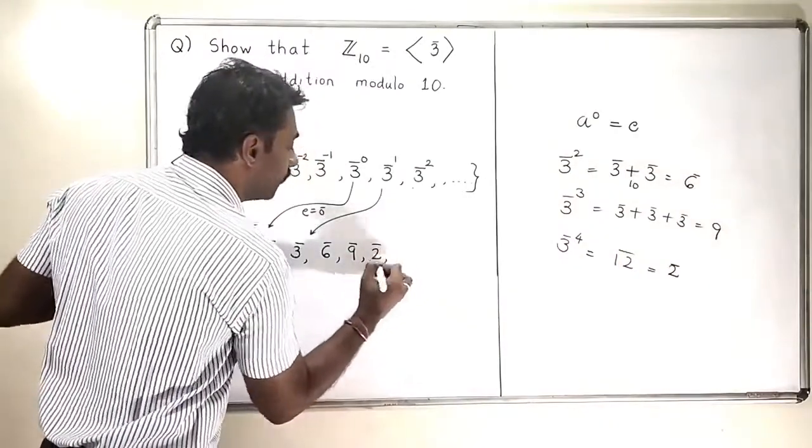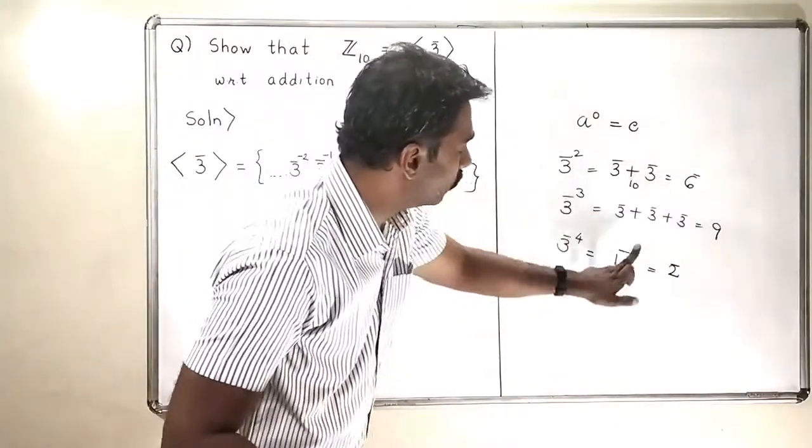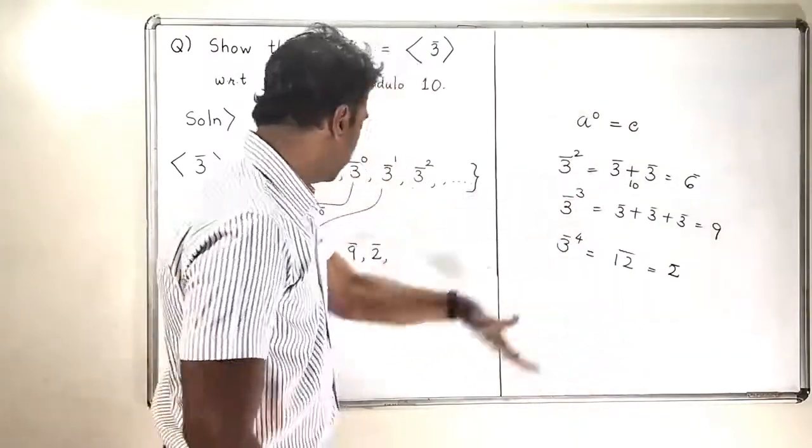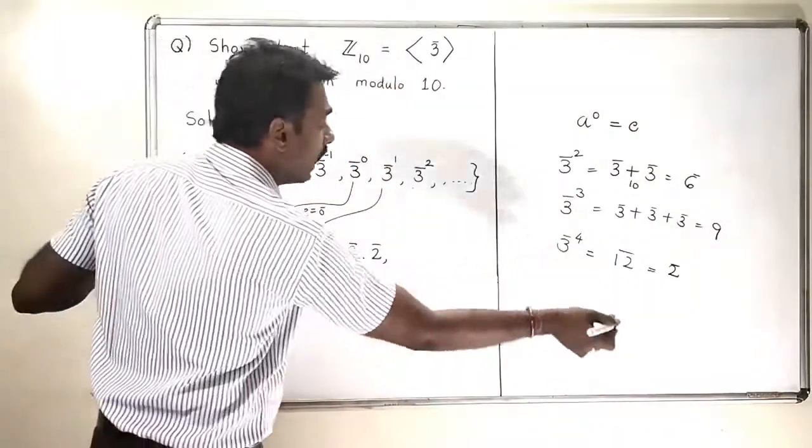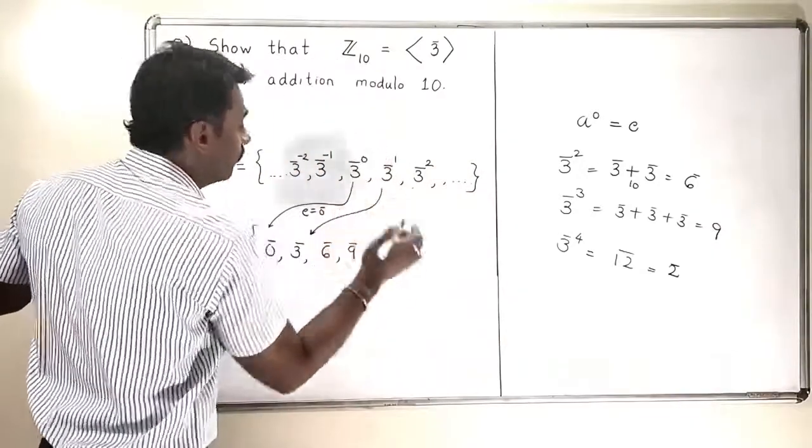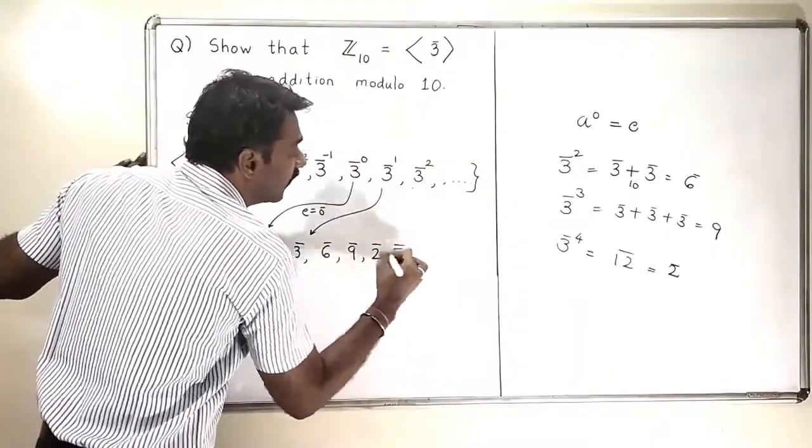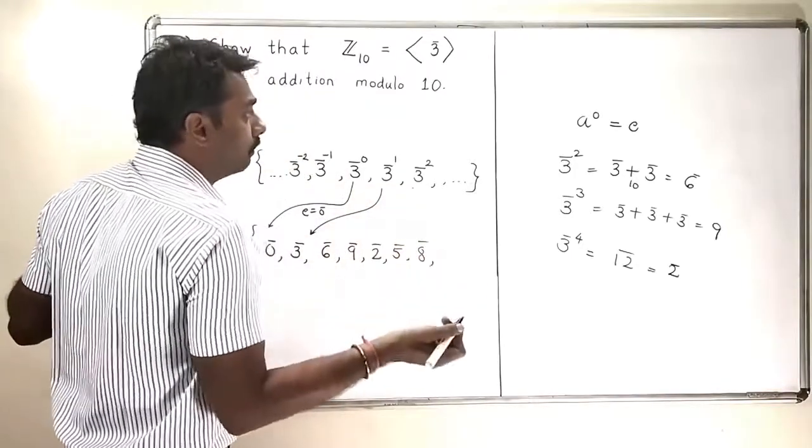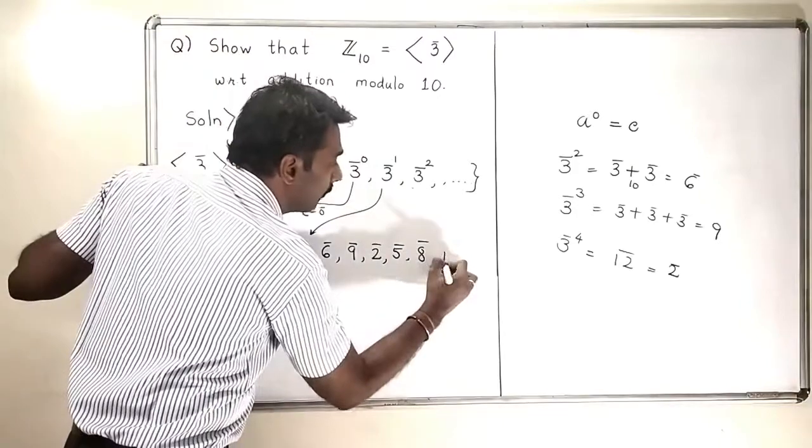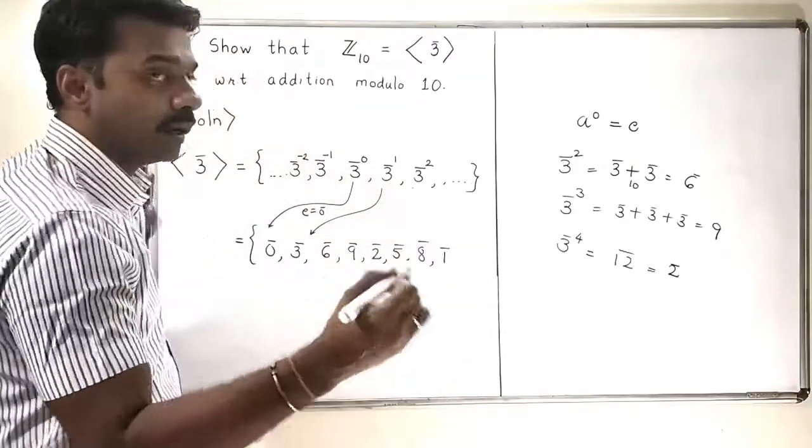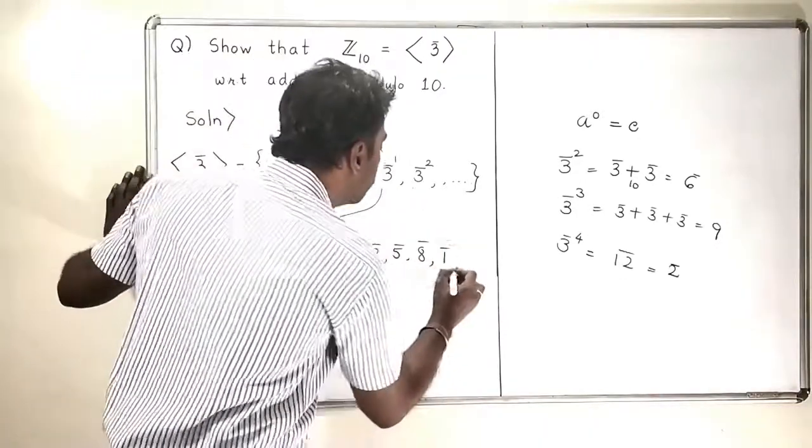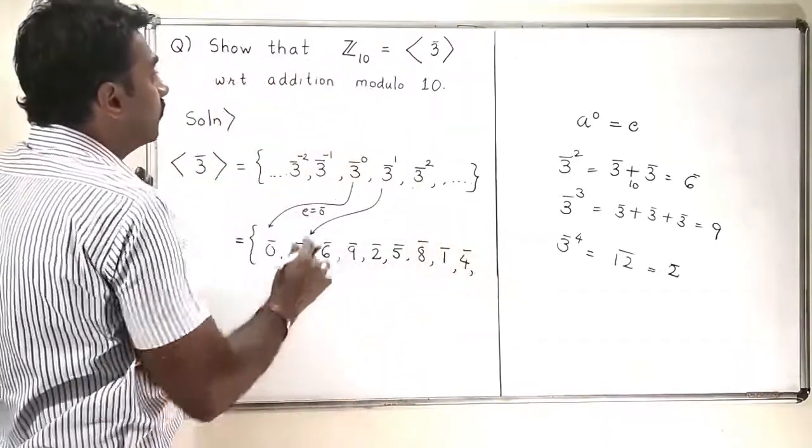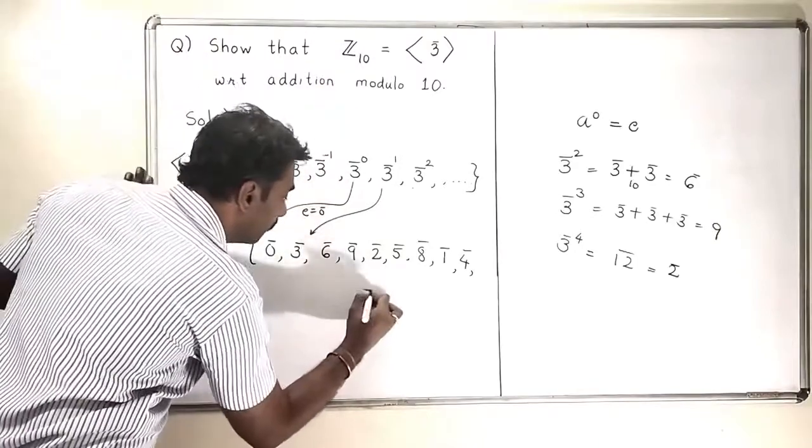And now I am going to continue this process. So this is 6, 9, 12, 15, 18, 21—that is a table of our 3. Then 15 bar will become modulo 10, 5 bar. 18 bar modulo 10 remains 8 bar. Then 21 bar will become 1 bar because 20 bar is 0 bar. 24 bar modulo 10 will become 4 bar. 27 bar will become 7 bar.